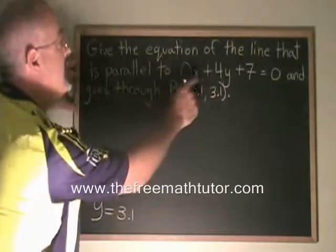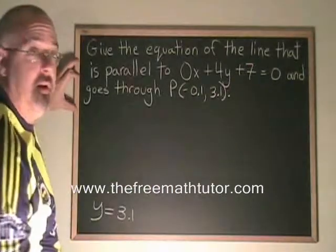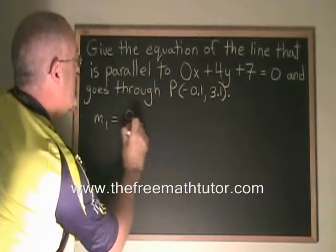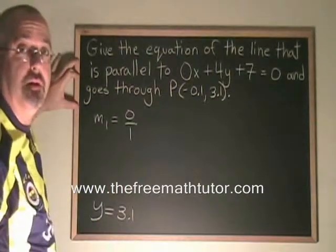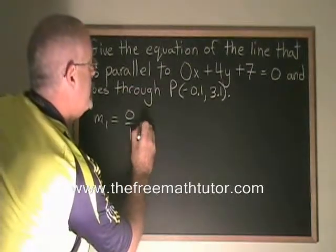First, I need to know the slope of the line that was given. The slope of this horizontal line can be expressed most easily as 0 over 1. The slope of all horizontal lines is equal to 0, but I want a fraction.